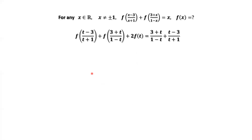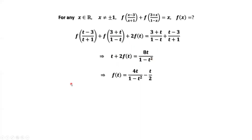We simplify both sides. Based on the given equation, if we replace t by x, this is x. The sum of the first two terms gives 2 f of t. Simplifying the right-hand side, we have 8t over (1 minus t squared). Solving this equation for f of t, we have f of t equals 4t over (1 minus t squared) minus t over 2.